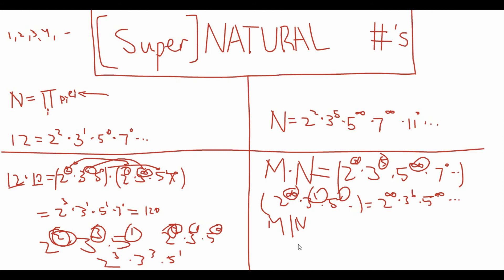There's one special thing about supernatural numbers: the number n equals 2 to the power of infinity, times 3 to the power of infinity, times 5 to the power of infinity, and so on, is defined to equal 0. I know — it's weird, but it's equal to 0.